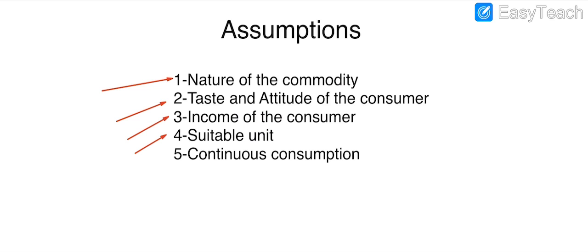The next assumption is that there must be a suitable size. Suitable size means every time we take a full unit of apple — a whole apple, not a slice. If we cut one apple into slices and each slice is an additional unit, that is not accurate. The size of a unit must be an appropriate or suitable size.